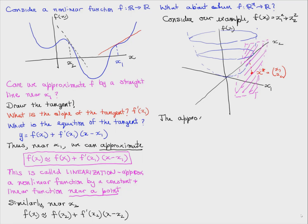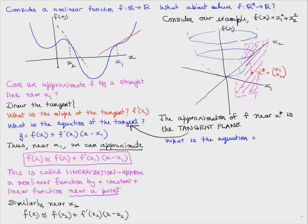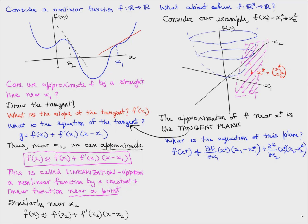The approximation of f near x star is not a straight line like it was in the 1D case, but it's a plane. This plane is called the tangent plane, just like the line was called the tangent line. The equation of this plane is f of x star plus the partial derivative of f with respect to x1 evaluated at x star times x1 minus x1 star, plus the partial derivative with respect to x2 times x2 minus x2 star.